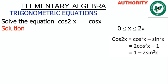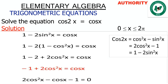We discovered that cos 2x equals 1 minus 2sin²x. So in the place of cos 2x, we replace it with 1 minus 2sin²x. We then have: 1 minus 2sin²x is equal to cos x.